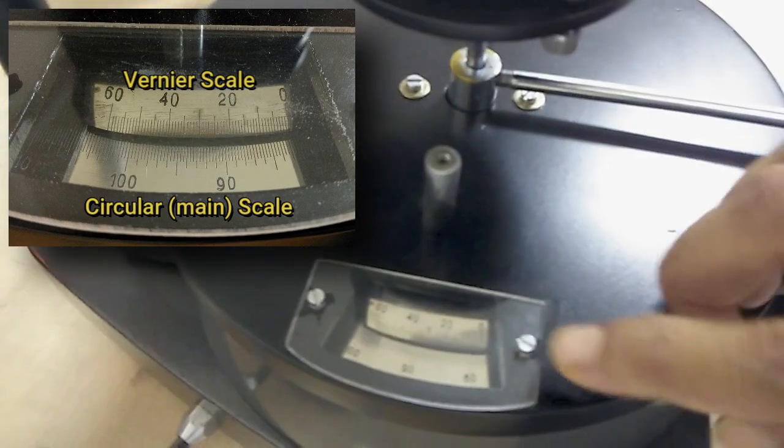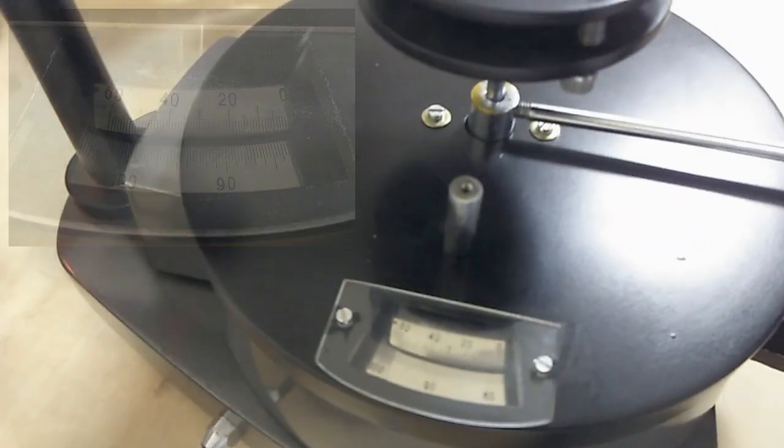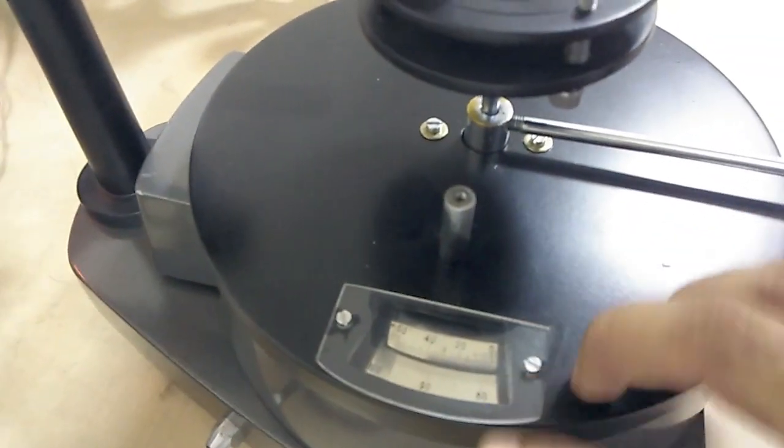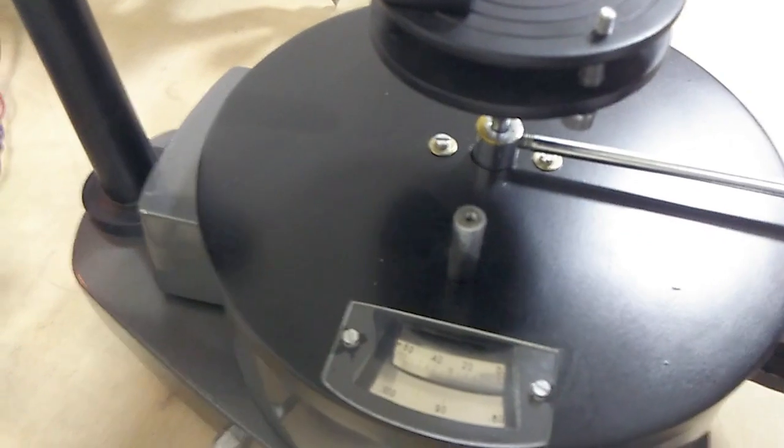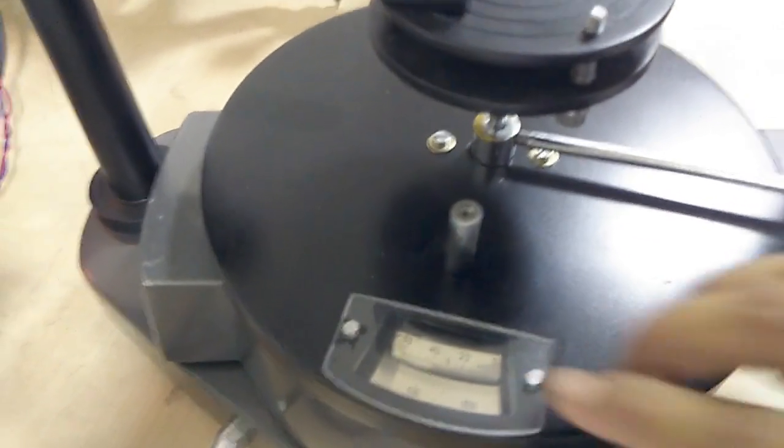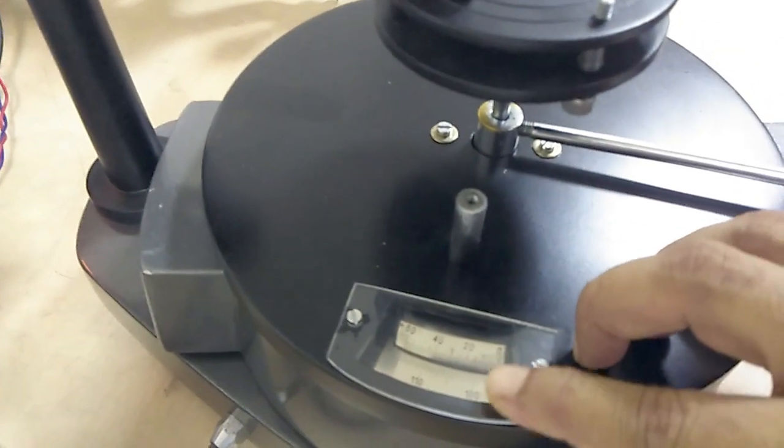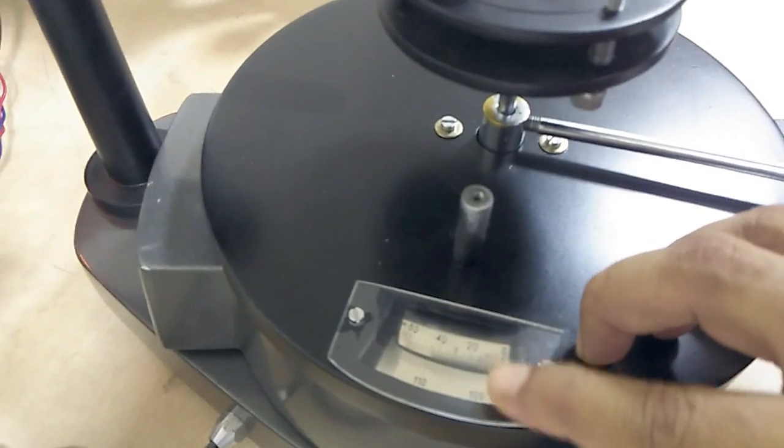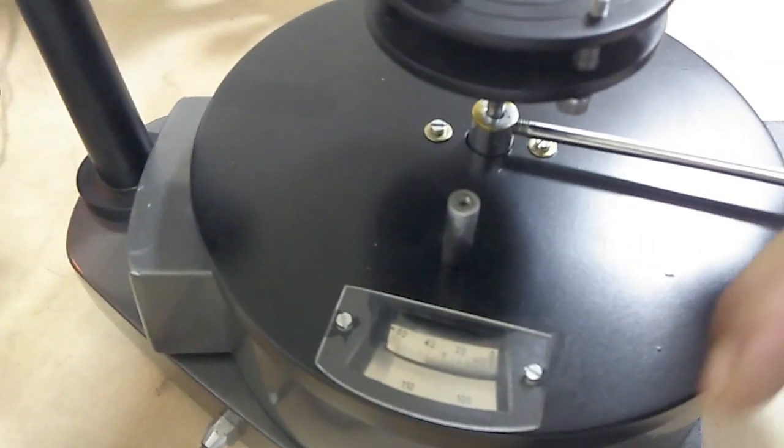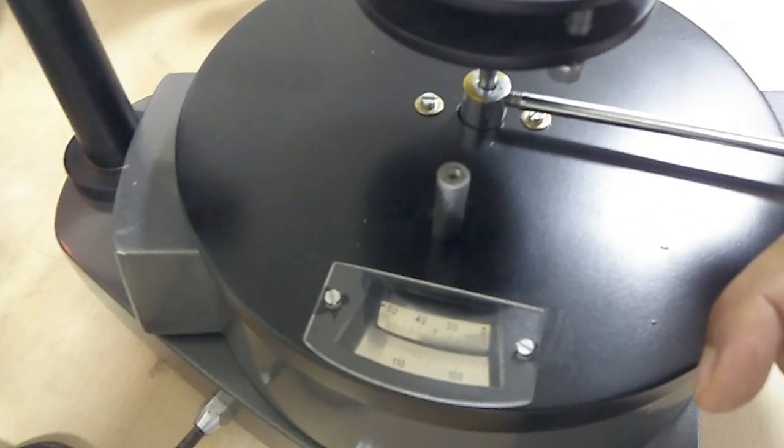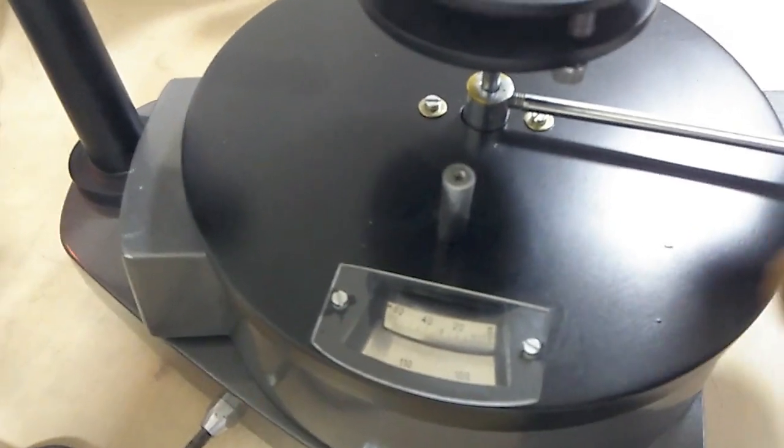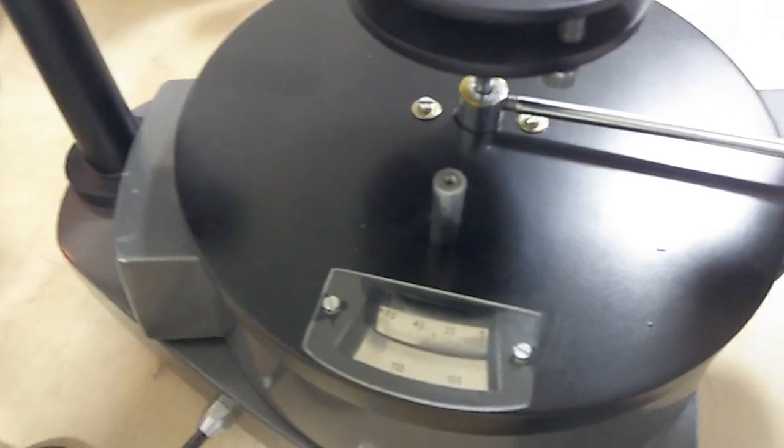So if I keep track that for a particular position what was the reading and then for the next position after some rotation I find out what is the position again and if I take the difference between these two recordings then I can calculate how much I rotated it.